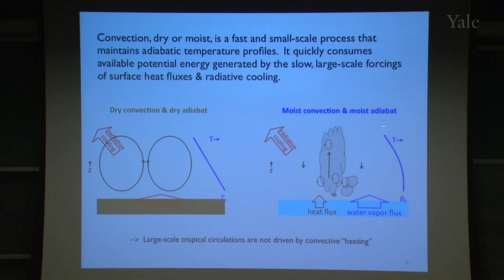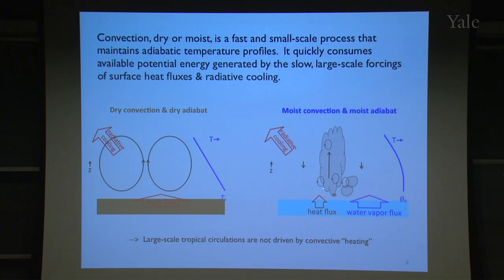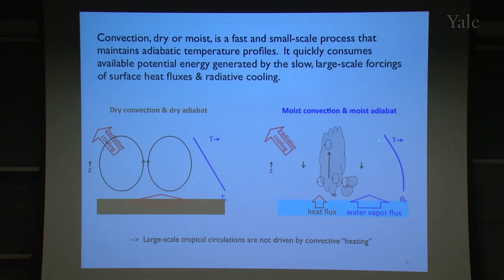The same argument applies to moist convection. Moist convection looks very different from dry convection — the upward motions tend to be more concentrated and stronger, and downward motions are weaker. Nevertheless, these turbulent motions in and around clouds constrain the free troposphere temperature structure to be near that of a moist adiabat, which falls off at a weaker rate than 10 Kelvin per kilometer — somewhere closer to 6 Kelvin per kilometer, variable with height and temperature.